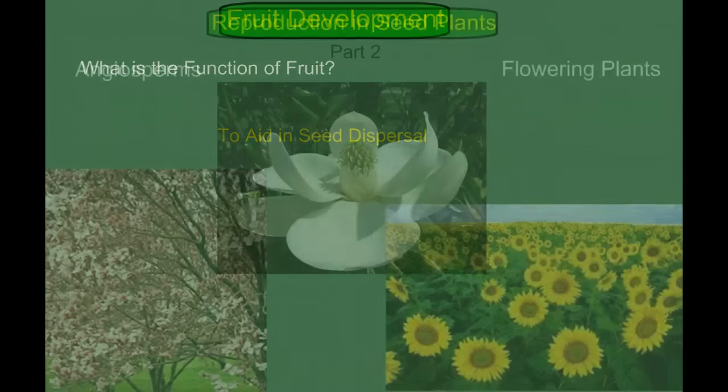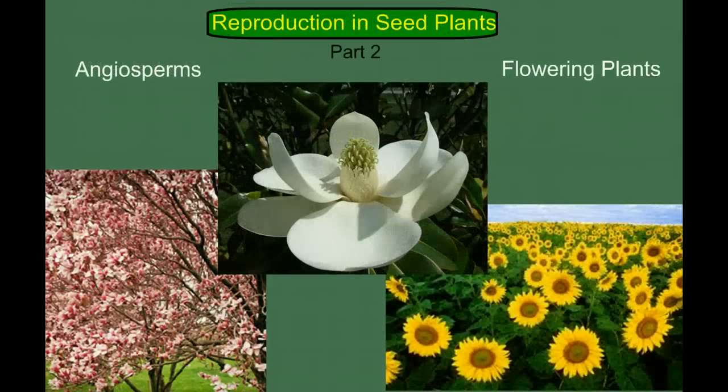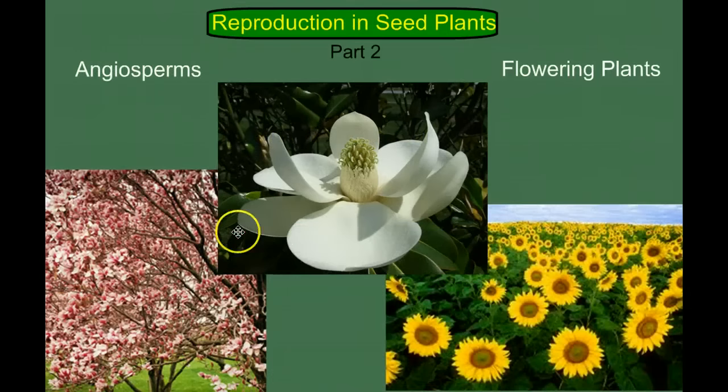Seeds allow plants to move into a broader range of environments, and flowers and fruits have evolved to aid in reproduction and spread the seeds. That brings us to the end of our video on angiosperm reproduction. If you have any questions, leave them in the comment section below, and I hope you learned something.